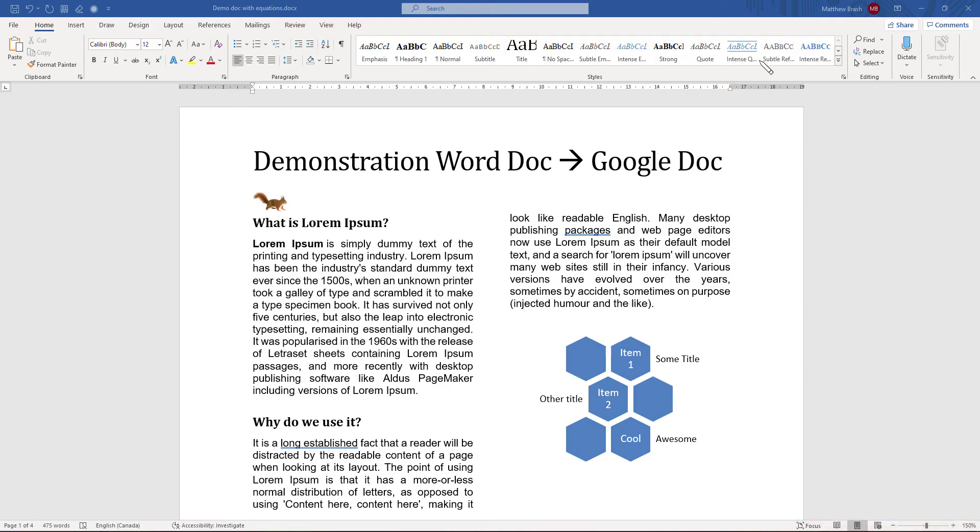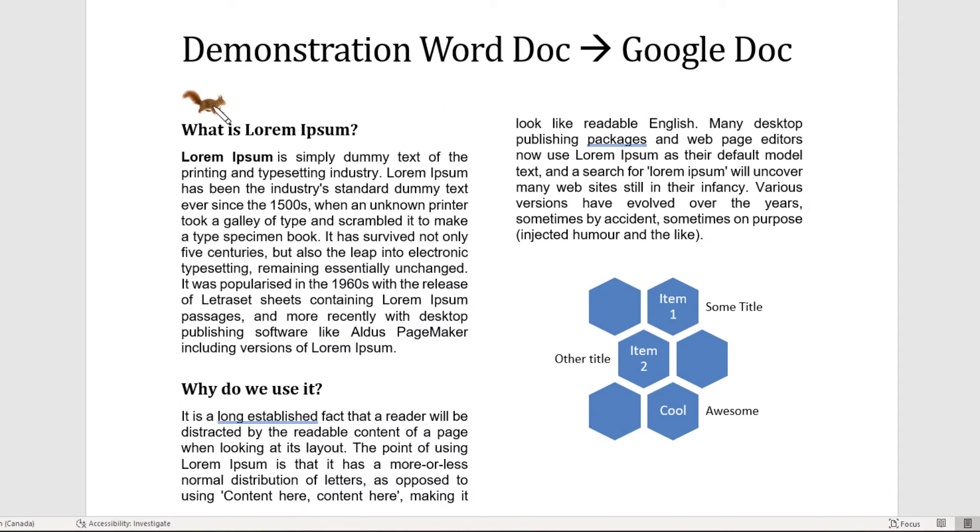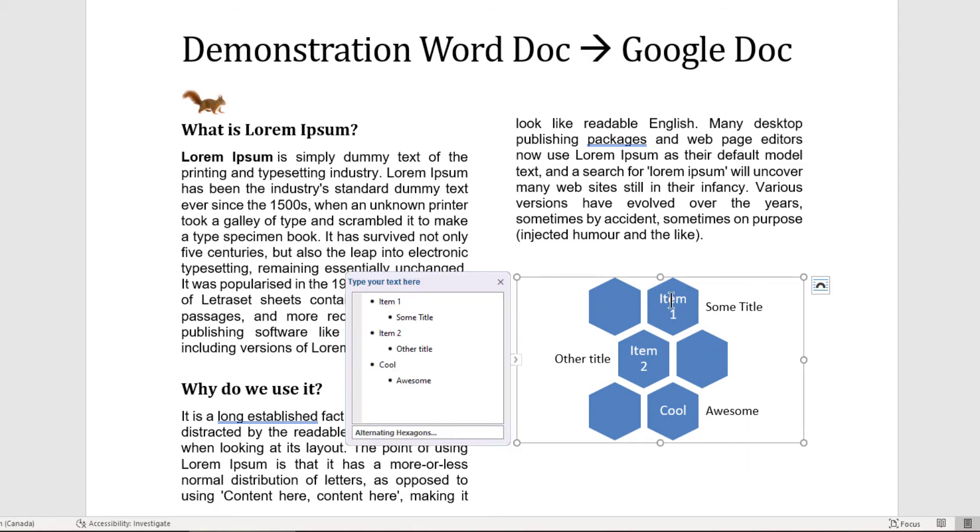So I've just created this Word document here. It's got columns in it, a picture here of my good friend Mr. Squirrel. If you took any of my math classes, you'd know who he is. I've got a fancy arrow character in here and even a smart diagram from the Word document.